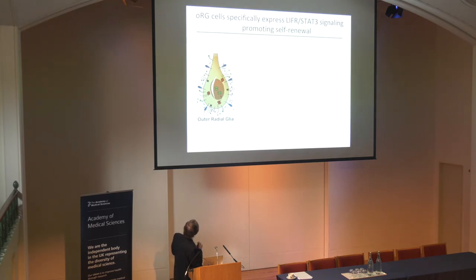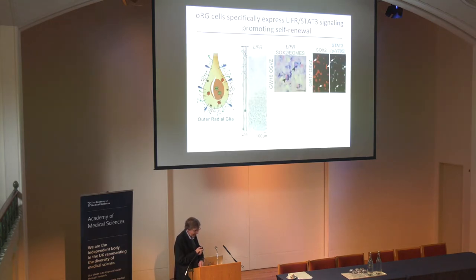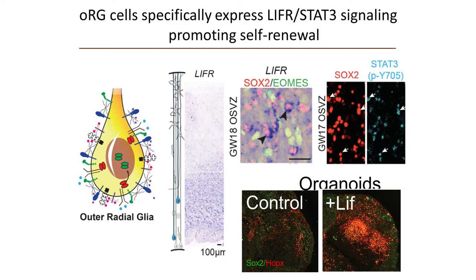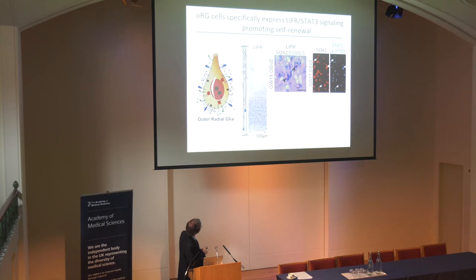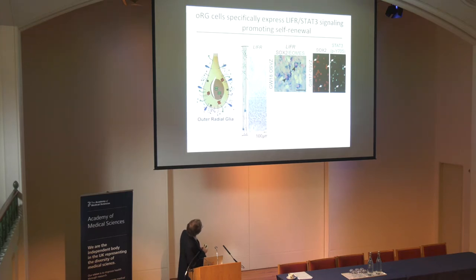These two ways of looking at cells have highlighted unique features of these outer radial glia. Shown schematically are some of the membrane proteins we now think are unique to outer radial glial cells, and I want to talk about two signaling pathways in particular. One is the LIF-R STAT3 signaling pathway, which is common in many other stem cell organs and systems as part of a self-renewal program. In these early stages of human development, it's only expressed in the outer radial glial cells — only the SOX2-positive outer radial glia, not the TBR2/EOMES-positive intermediate progenitors.